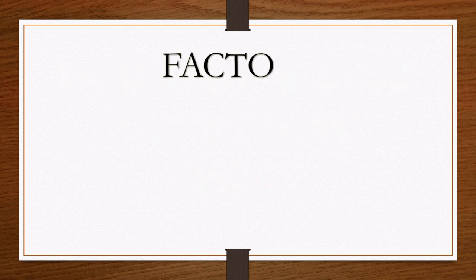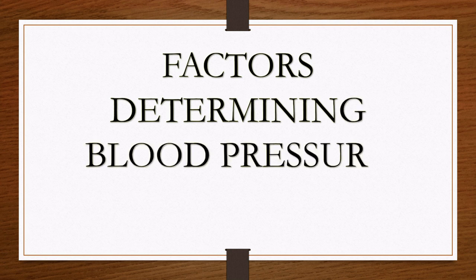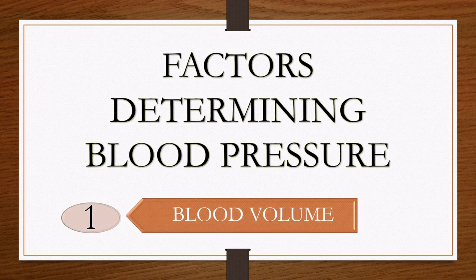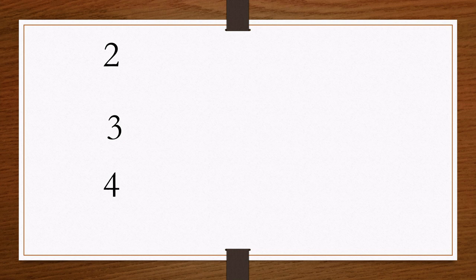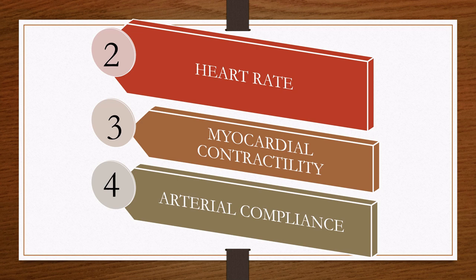Let's see the factors that determine blood pressure. The first one is blood volume. If blood is too much, will it lead to high blood pressure or low blood pressure? If blood is very little, will it lead to high or low blood pressure? The second, third, and fourth factors are heart rate, myocardial contractility, and arterial compliance.